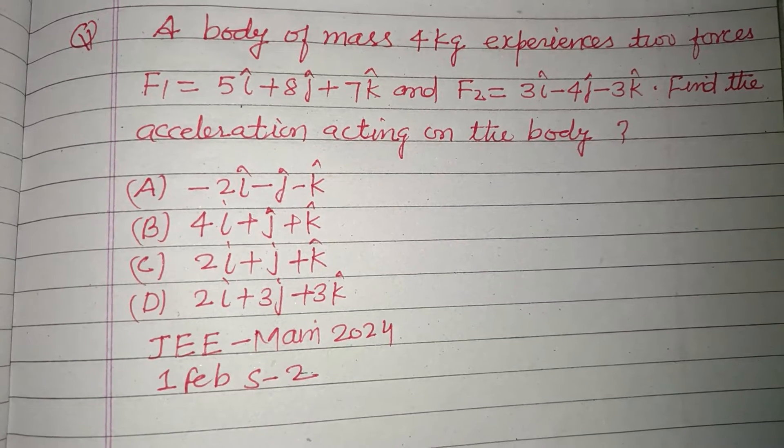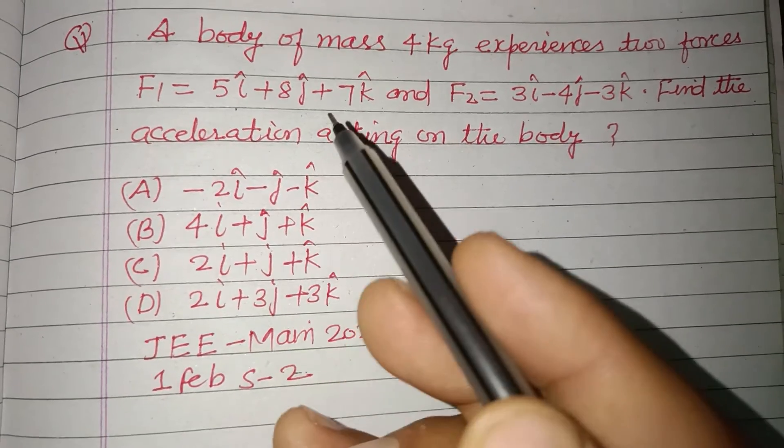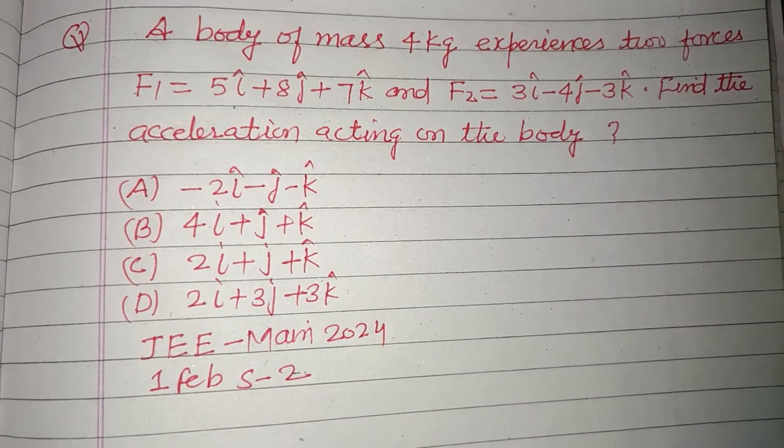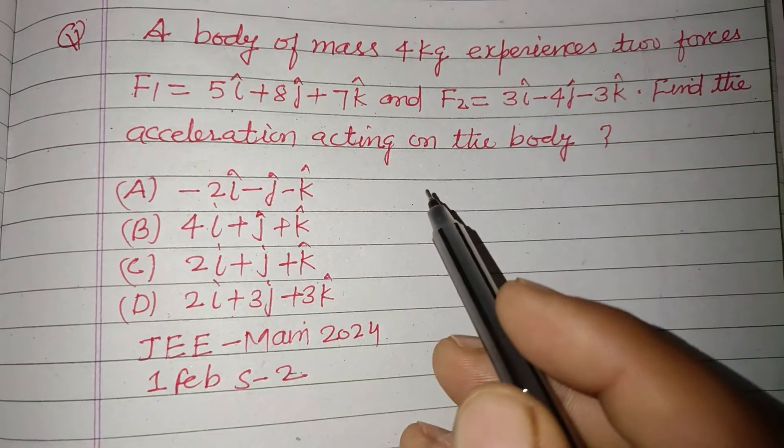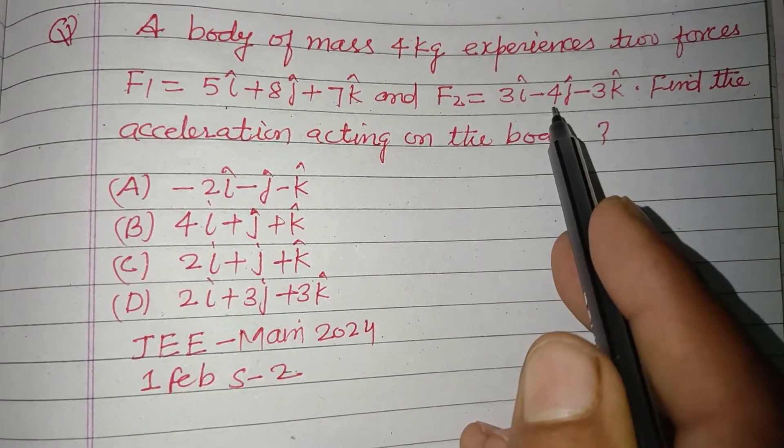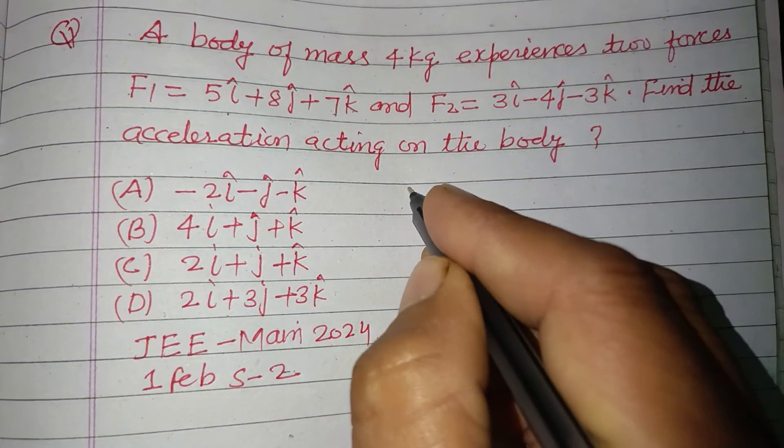Viewers, welcome to this YouTube channel. This is a question from JEE Main 2024, first February shift second. If a body of mass 4 kilogram experiences two forces F1 equal to 5i cap plus 8j cap plus 7k cap and F2 equal to 3i cap minus 4j cap minus 3k cap, find the acceleration of the body.